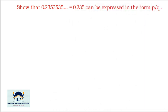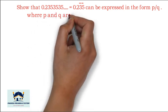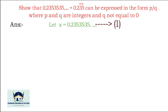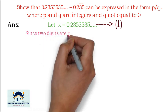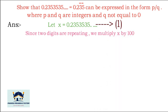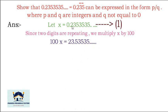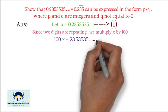Show that 0.2353535... which equals 0.235̄ can be expressed in the form p/q where p and q are integers and q ≠ 0. Let x = 0.2353535... — call this equation 1. After the decimal point, 2 is not repeating; only 3535 repeats. Since 2 digits are repeating, multiply by 100.